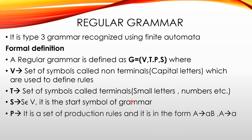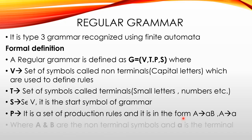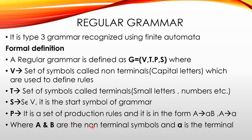P means it is a set of production rules, and it is in the form A gives aB or A gives a — that is, a single terminal, or a single terminal followed by a Non-Terminal. This is the production rule for Regular Grammar. Capital A and B are Non-Terminals and small 'a' is the Terminal. This is the formal definition: V is Non-Terminals, T is Terminals, P is production rules, and S is the start symbol.